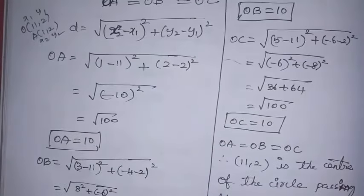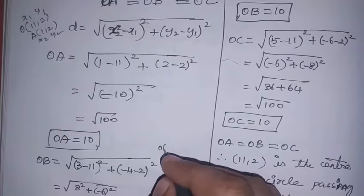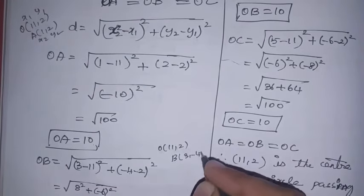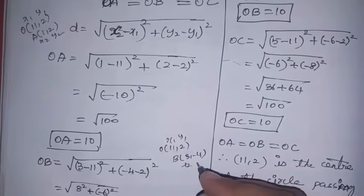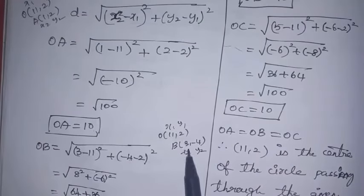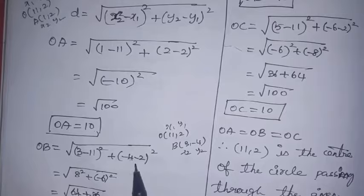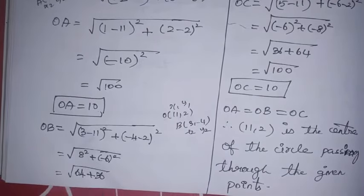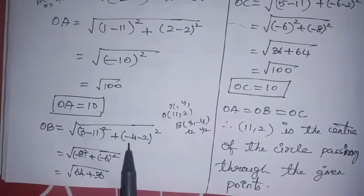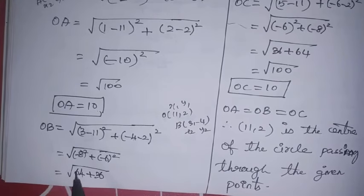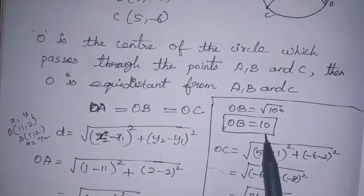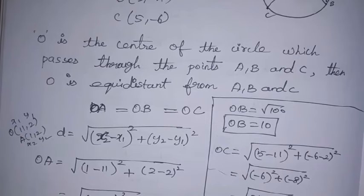Next, find OB. O is (11, 2) as (x1, y1) and B is (3, −4) as (x2, y2). OB = √[(3 − 11)² + (−4 − 2)²] = √[(−8)² + (−6)²] = √[64 + 36] = √100 = 10 units.